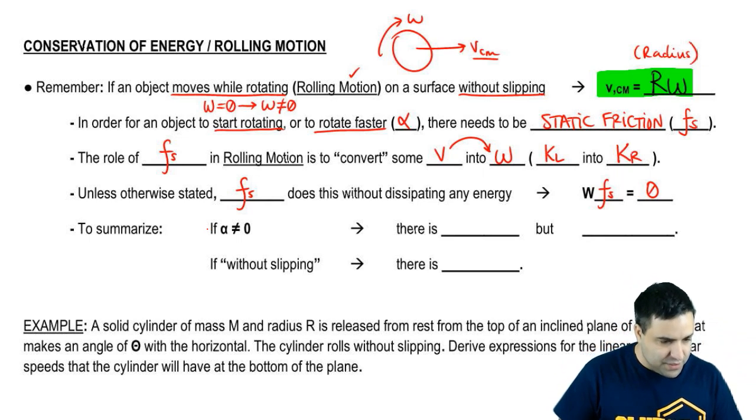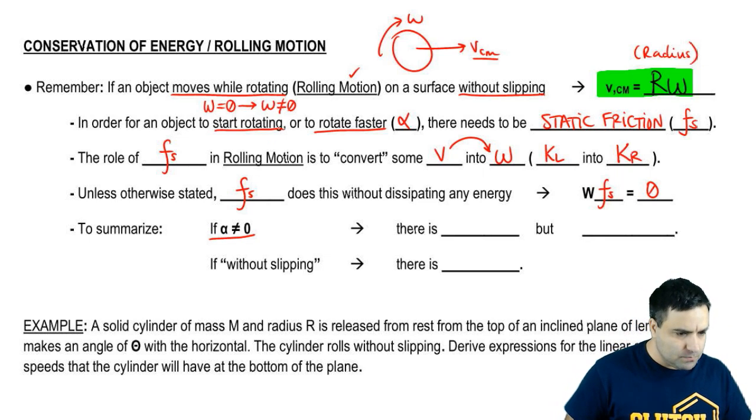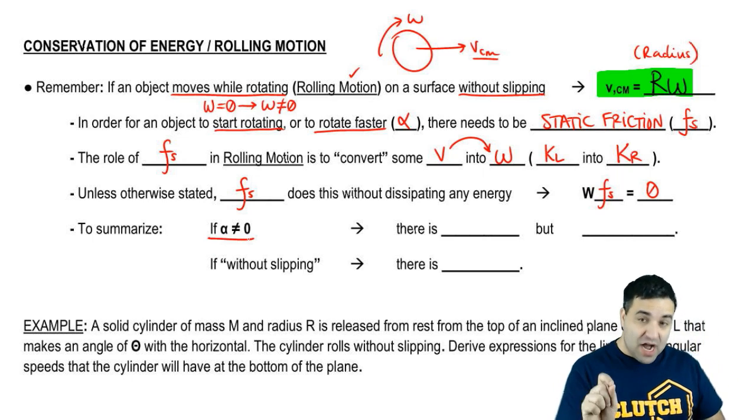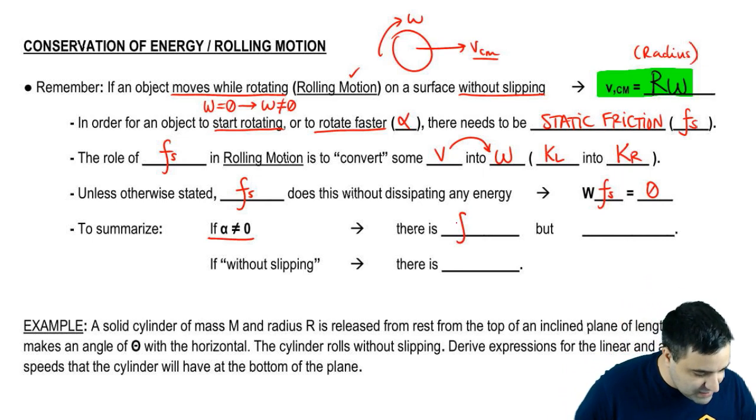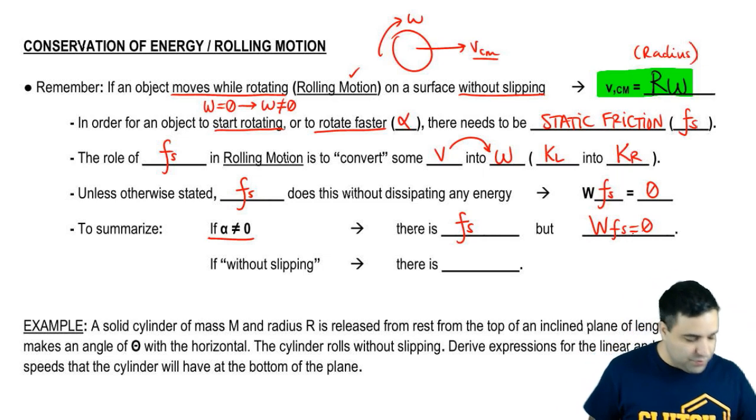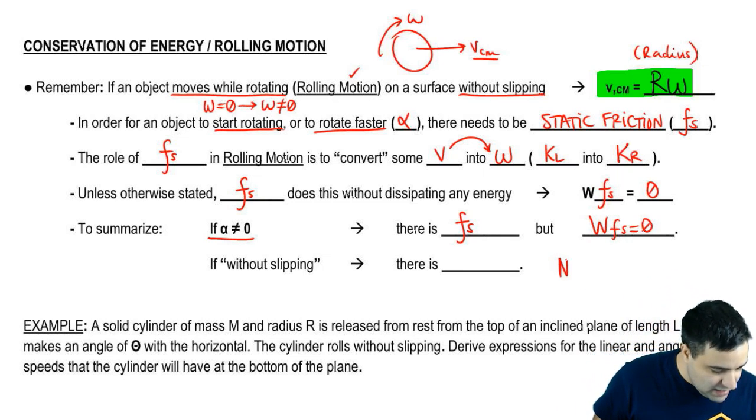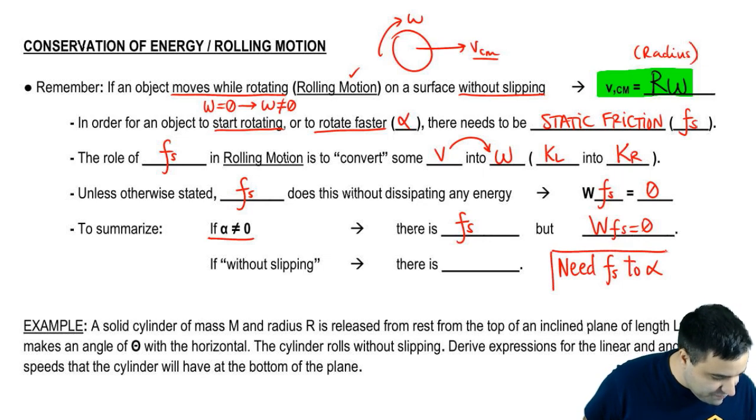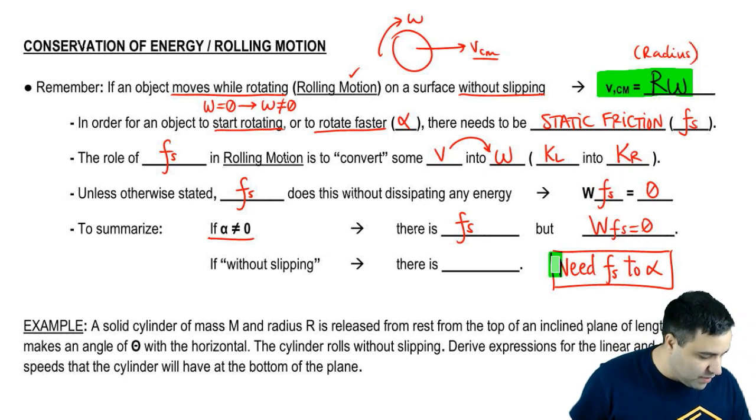So very briefly here to summarize, if you do have an acceleration, if acceleration is not zero, there has to be a static friction, but the work done by static friction is zero. The phrase that I want you to remember here is that you need FS in order to have alpha in these kinds of problems.